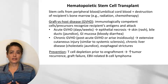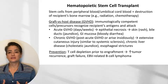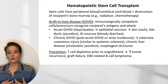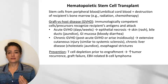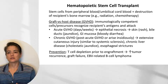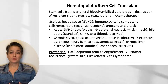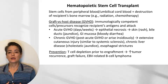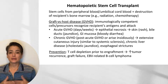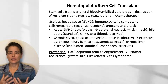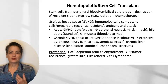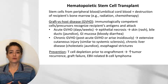Chronic GVHD can develop right after acute GVHD or arise insidiously, causing more scarring. The cutaneous injury is similar to systemic sclerosis with fibrosis in the skin and atrophy of appendages. We can get chronic liver disease with cholestatic jaundice, and GI effects such as esophageal strictures. One prevention strategy is to deplete T cells from the graft, but this reduces the graft-versus-tumor effect, leading to increased tumor recurrence, increased graft failure, and increased risk of Epstein-Barr virus-related B cell lymphoma.